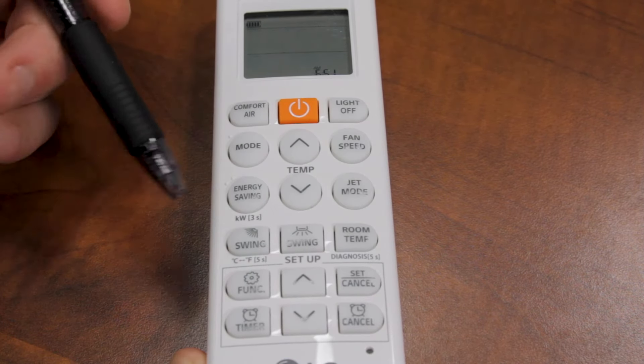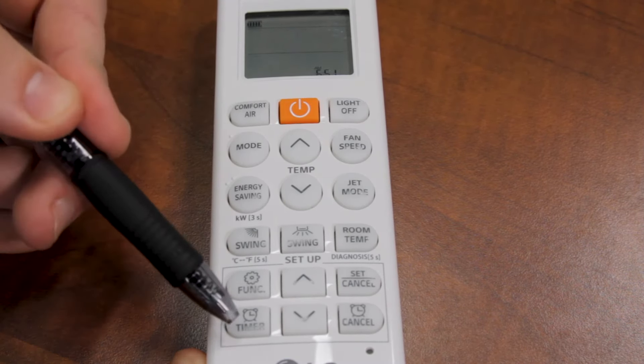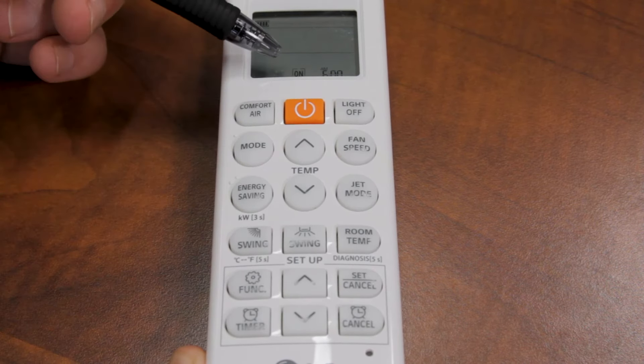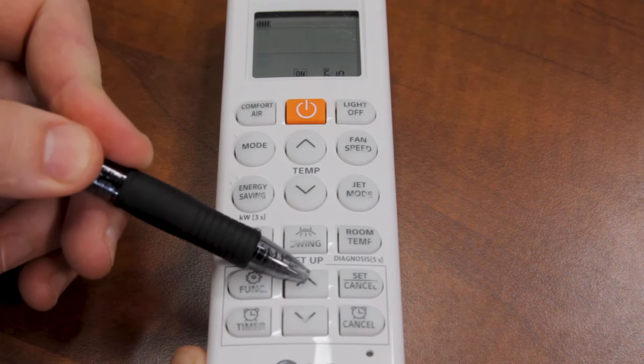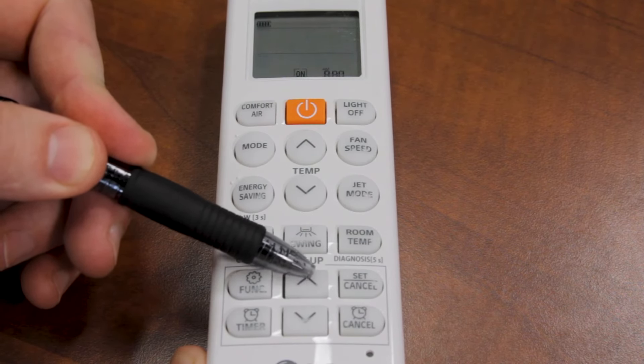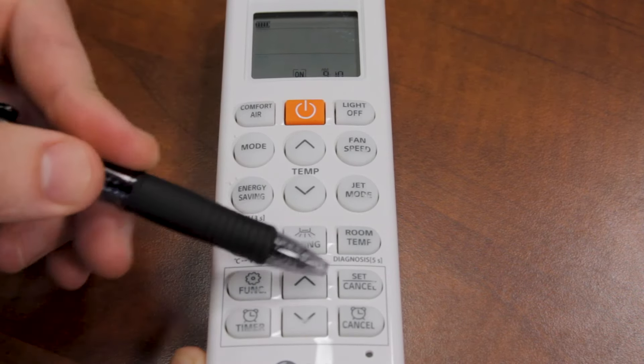To use the daily timer, the first thing you do is press timer. It's going to say on here with a different time. You're going to change it to what time you want it to turn on. And once you're at that time, you're going to press set.